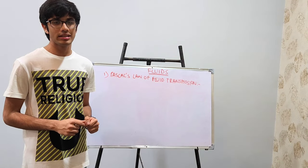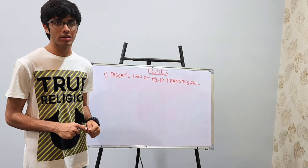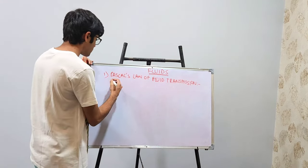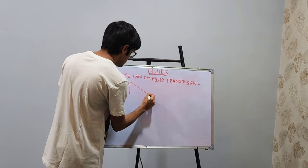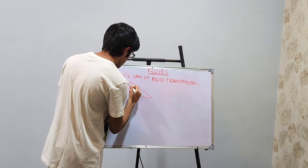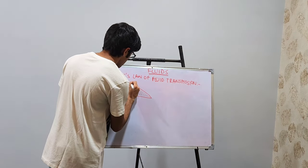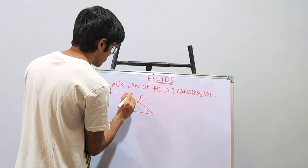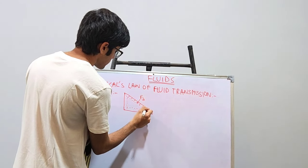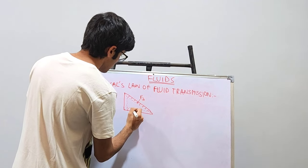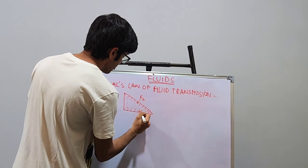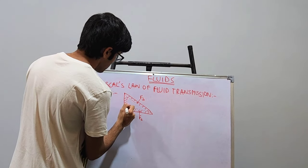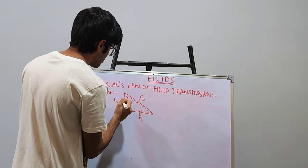This law basically states that the pressure exerted at any point on an enclosed cylinder is transmitted equally in all directions. So let us look at the proof of this law. This is an enclosed cylinder. Let's say a force FB acts on this portion, and a force FA acts on this portion, and a force FC acts on this portion.